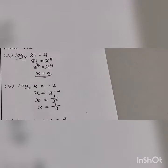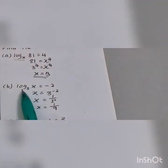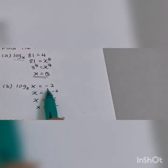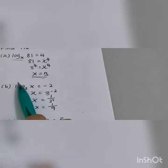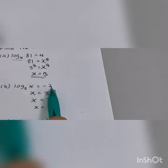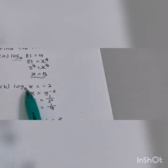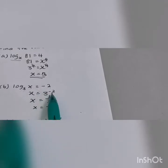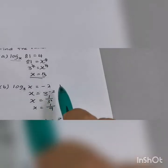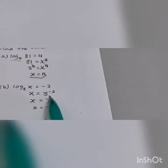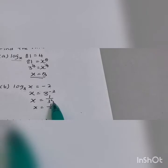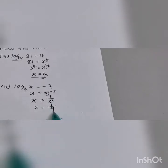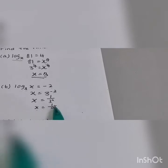Next one: log base 3 of x equals negative 2. Move to the right-hand side — 3 becomes the base, negative 2 becomes the power. So 3 to the power negative 2: you need to rotate it, becoming 1 over 3 squared. 3 squared is 9, so the final answer is x equals 1 over 9.